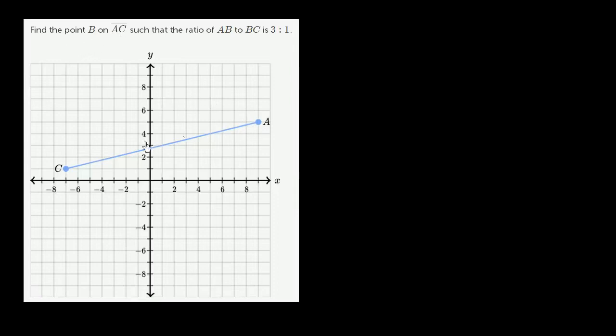Find the point B on segment AC such that the ratio of AB to BC is 3 to 1. And I encourage you to pause this video and try this on your own.